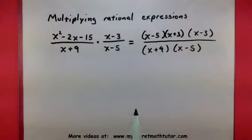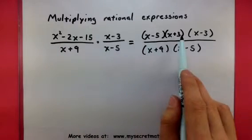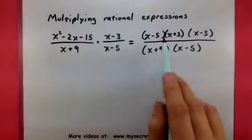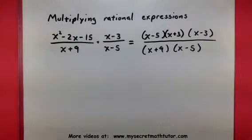Let's foil these guys to double check. So x times x, x squared, outside is 3, inside is negative 5, those combined to give me the negative 2, and negative 5 times 3, negative 15, perfect.